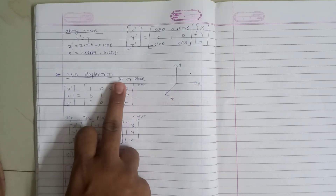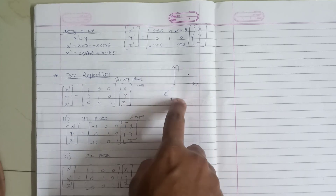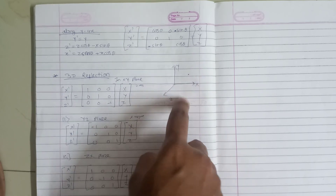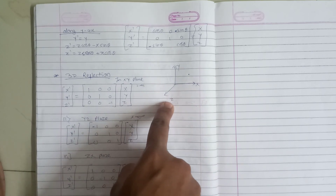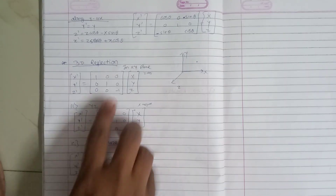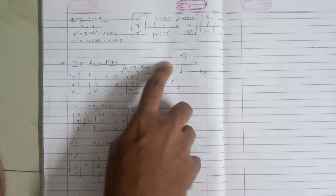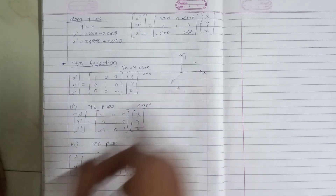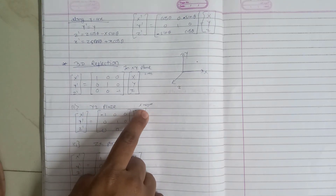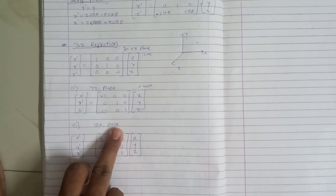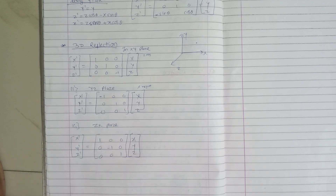After rotation, we have 3D reflection. When we reflect a point across the xy plane, the remaining coordinate (z) changes its sign to negative. If we take the yz plane and reflect, the remaining coordinate x changes its sign. Similarly, for the zx plane, y changes its sign. This is 3D reflection.